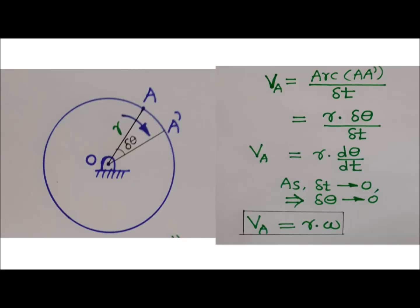Velocity is rate of change of displacement with respect to time. Let us say during time delta T, point A will move from A to A dash and will trace arc A A dash. Hence velocity at point A, VA, will be equal to arc A A dash, that is displacement, divided by time delta T.